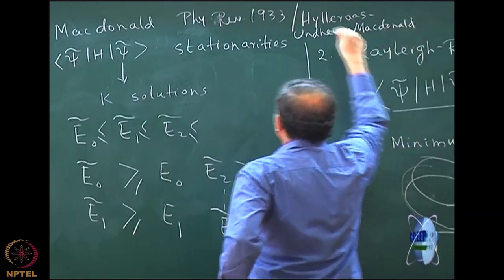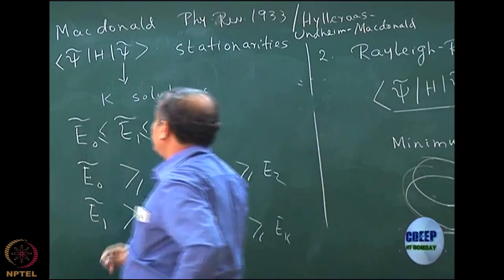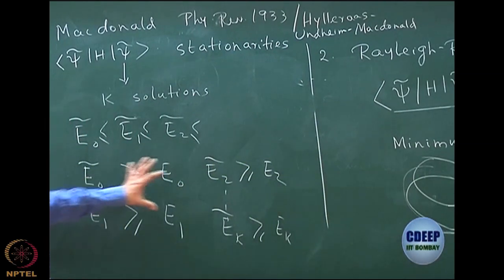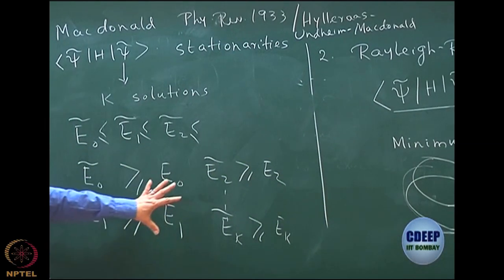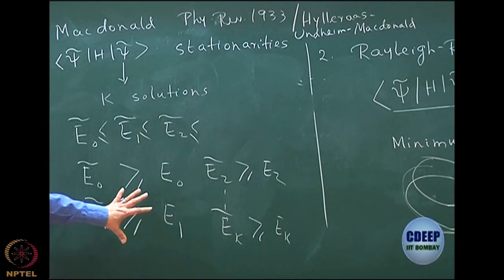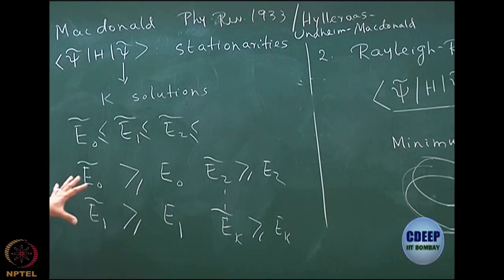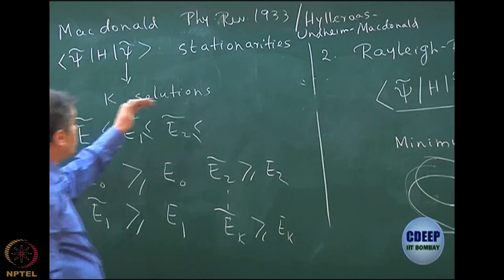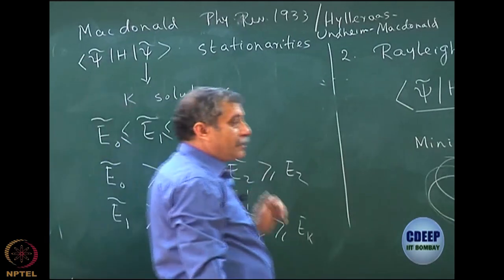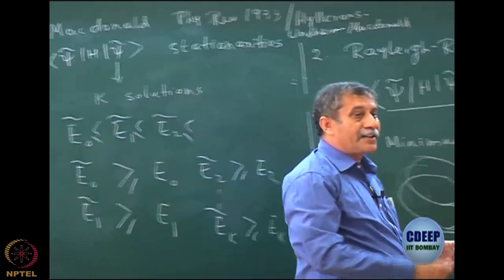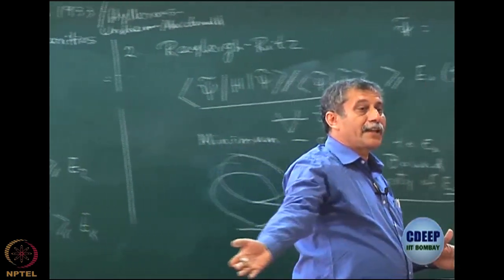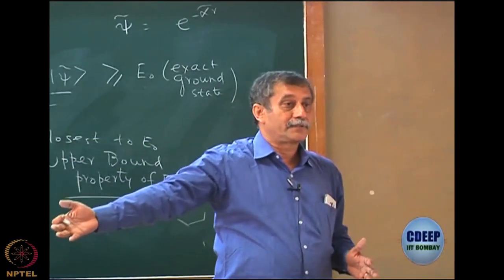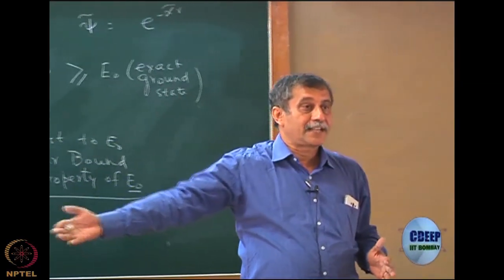It is a very, very nice paper by MacDonald, and this was expanded later by Hylleraas and Undheim. What I am going to talk about is now called the Hylleraas-Undheim-MacDonald theorem. That is the theorem I am going to state. The first part is that each of the solutions is greater than or equal to its corresponding exact solution — the tildes are variational solutions, and these are exact solutions.